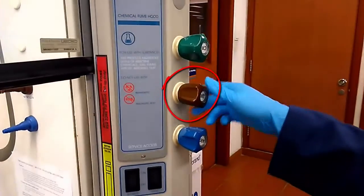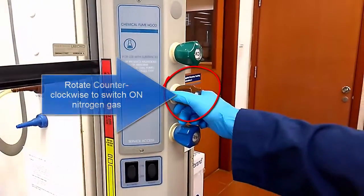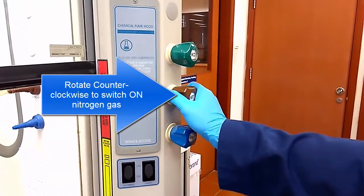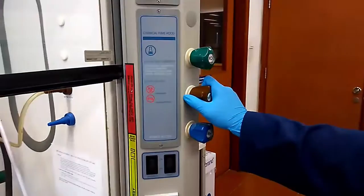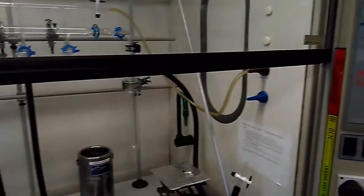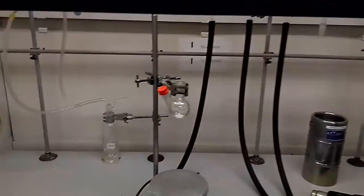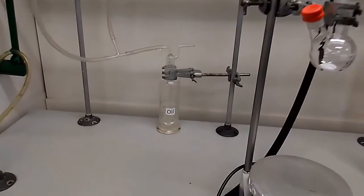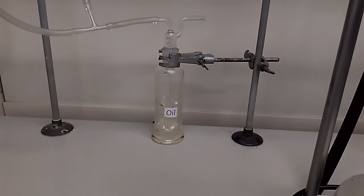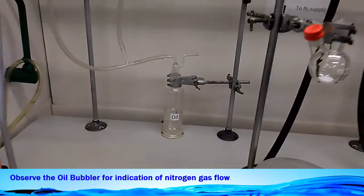So you see this brown knob. This is a nitrogen source. You rotate carefully, turn it on. Make sure that the nitrogen is going in. And how do you check? You have the oil bubbler on the left-hand side. Here you see there's intense bubbling to show that we have nitrogen gas going into the two-way manifold.